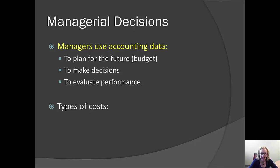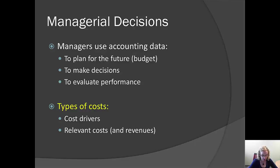In order to do all of this, we need to understand how various costs behave. One key to that understanding is what's called a cost driver — the thing we believe causes our costs to go up or down. We'll talk about how to understand cost drivers. In addition, we need to understand which costs are relevant, meaning which costs are going to make a difference to our decision. And depending on what the decision is, we might also want to think about which revenues are relevant.